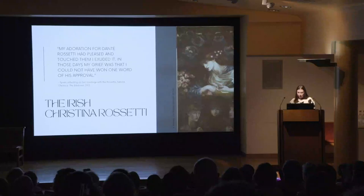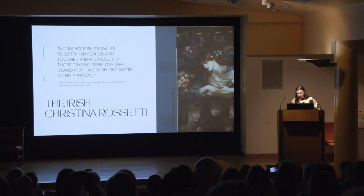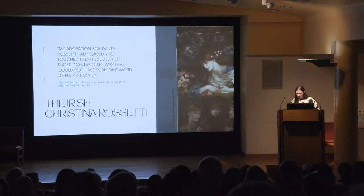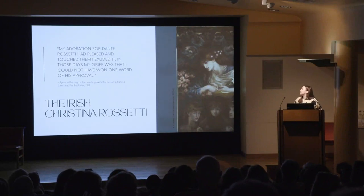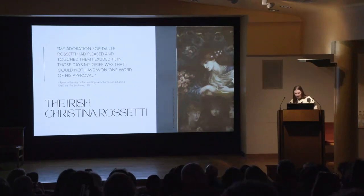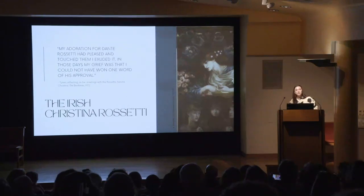For Tynan, the Rossetti family were central to the aesthetics of her early career. Peter van de Kamp remarks that Tynan hero-worshipped the Rossettis. Many reviewers of her first poetry collection, Louise de la Vallière, noted Rossetti's influence. Tynan met the Rossettis on several occasions from 1885 onwards, originally reaching out to William, sending him her first collection of poems which he greatly admired and shared with Christina, sending Tynan back autographed photos of Gabriel. Tynan proclaims that her adoration for Dante Rossetti had pleased and touched them: 'I exuded it. My grief was that I could not have won one word of his approval.'